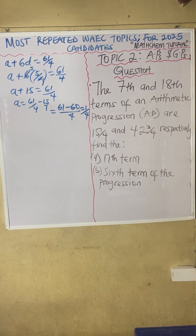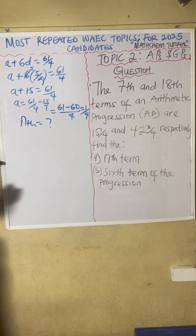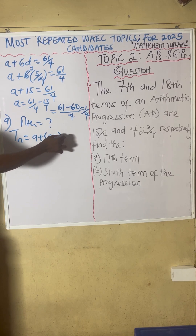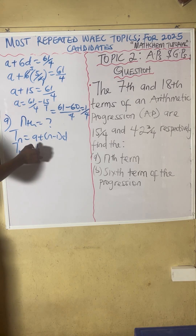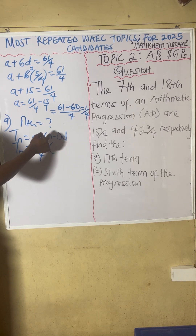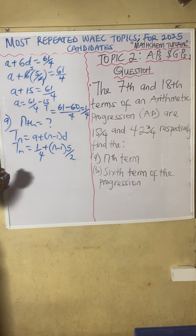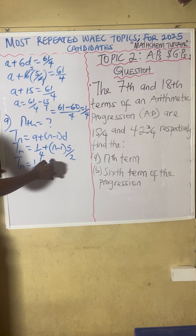So if our first term is 1 over 4, what will be the nth term? The nth term means that particular general term. We know the formula is Tn equals A plus (N minus 1)D. A is the first term, which is 1 over 4, and D is 5 over 2. So Tn equals 1 over 4 plus (N minus 1) times 5 over 2.